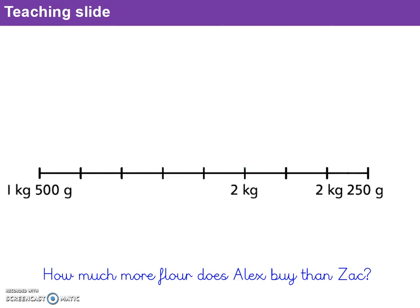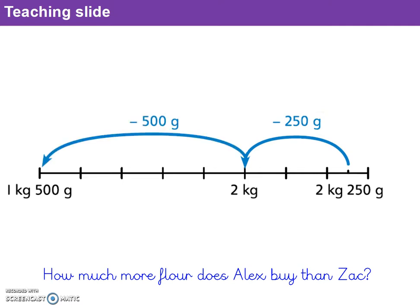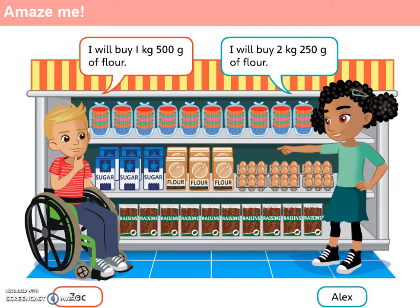I've represented this using a number line, looking for the difference between one kilogram 500 grams and two kilograms 250 grams, counting back. The first jump is from two kilograms 250 grams back to two kilograms — that's 250 grams. Then from two kilograms back to one kilogram 500 grams — that's another 500 grams. So altogether the difference is 250 grams plus 500 grams, which is 750 grams. For question 1a the answer is three kilograms 750 grams, and for question 1b the answer is 750 grams.